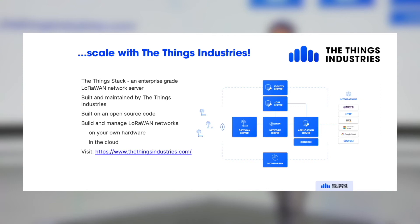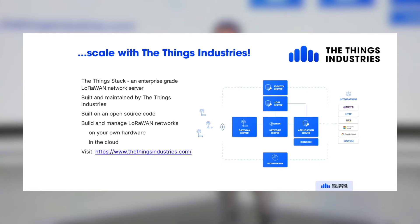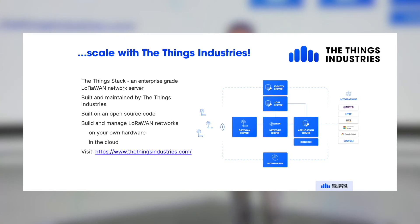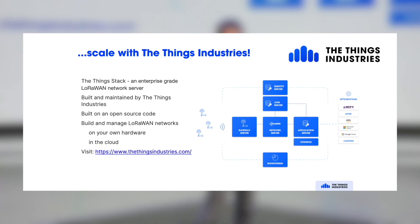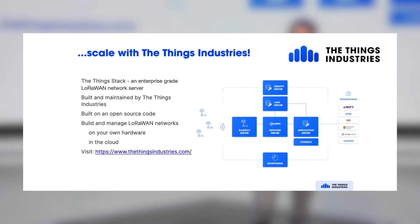The Things Industries is the developer of the Things Stack — that's the network server implementation. It has an open source core, so you can find that on GitHub. It's one of the largest open source projects from the Netherlands, where we're from originally. It allows you to build and manage your own LoRaWAN network. You can get the open source stack, but you can also use a hosted and SLA-backed version offered by the Things Industries. You can use your own hardware, your own devices, and you can get support, and you can even exchange traffic with the community network. So you get the best of both worlds.